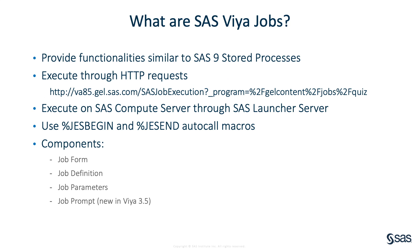ViyaJobs are available in SAS Viya. They provide similar functionalities to SAS 9 stored processes and are executed through HTTP requests. You see here a sample URL where you have the domain, the name of the server, the web application SAS Job Execution, and the name of the program being executed. You can also pass parameters in the URL. SAS ViyaJobs are executed on the Compute Server, which is launched by the SAS Launcher Server. You also have the opportunity to use GES Begin and GES End Autocall macros, which provide the functionalities needed to create web output or PDF output for your jobs.